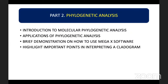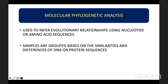Molecular phylogenetic analysis is used to infer evolutionary relationships based on nucleotide or amino acid sequences. Samples or data are grouped based on the similarities and differences of the genetic sequence. Phylogenetic analysis is dependent on the quality of alignment of the underlying data.